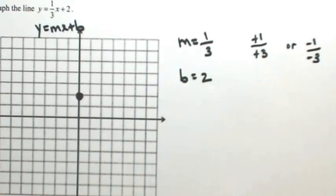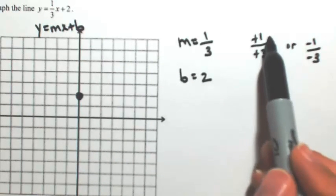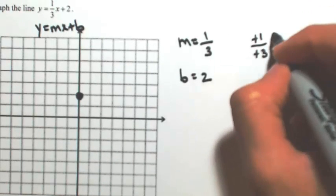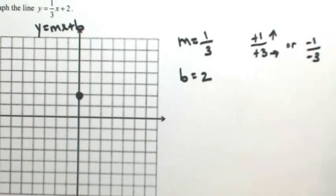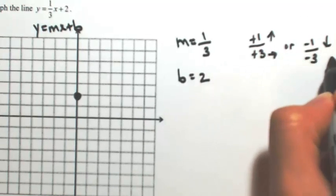If I view this as positive one over positive three, if the top is y and the bottom is x, this is going to be up and right three, or down and left.